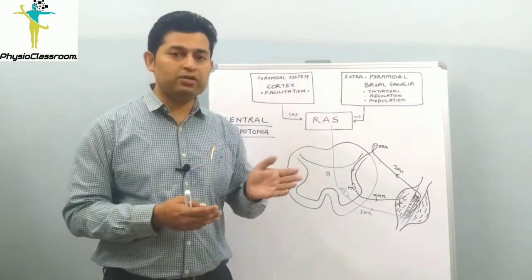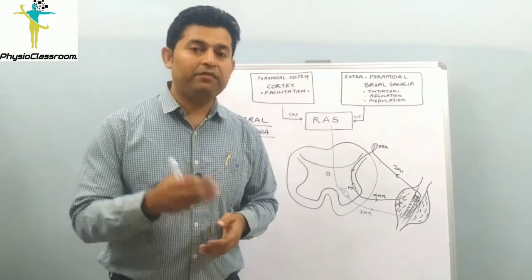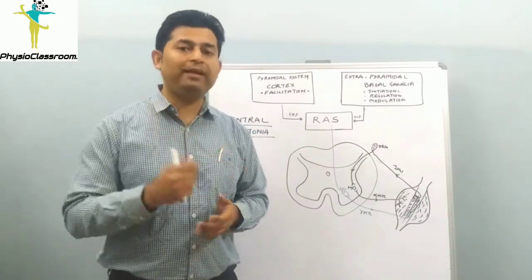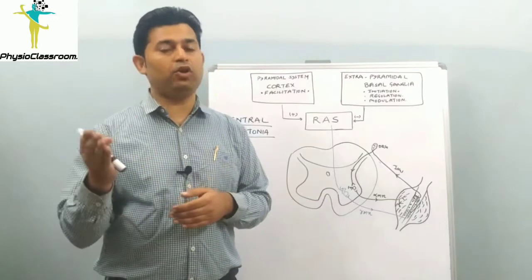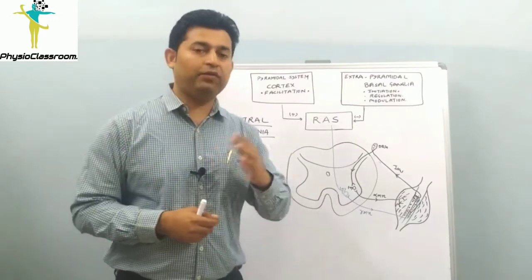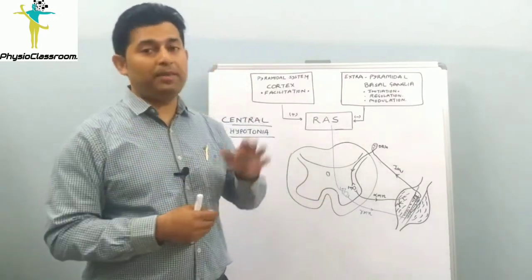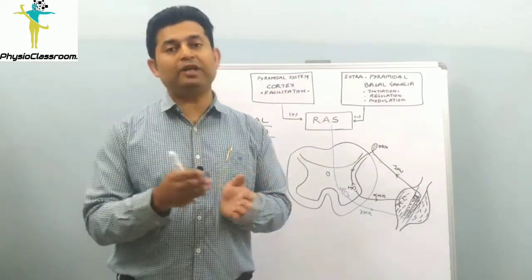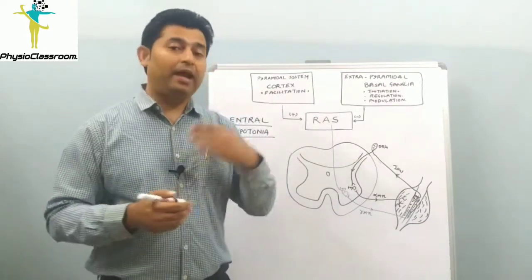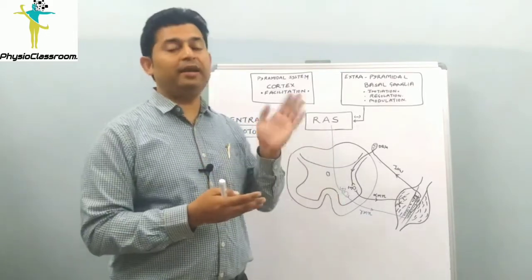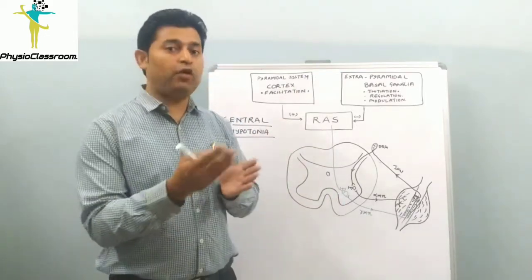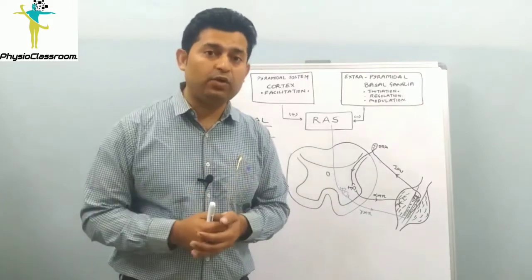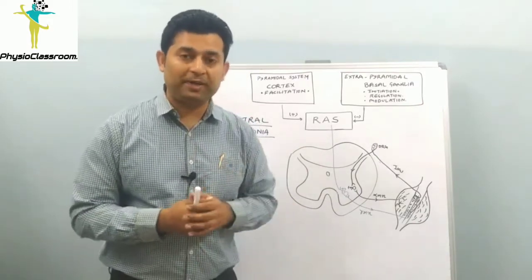In our previous two videos on spasticity and rigidity, we covered the two main subtypes of upper motor neuron lesion. In the first variety, both the pyramidal and extrapyramidal systems were damaged, leading to spasticity. In type 2, the extrapyramidal system was affected, leading to rigidity.